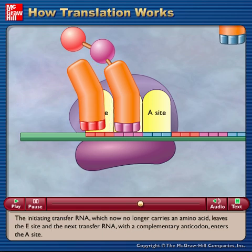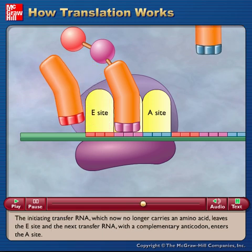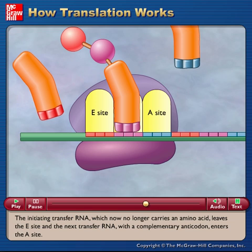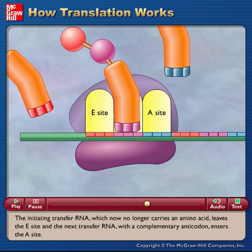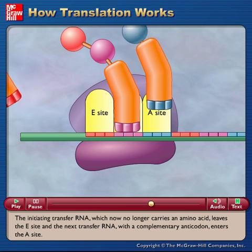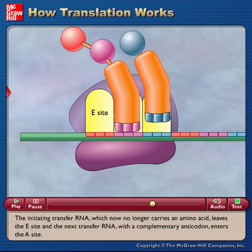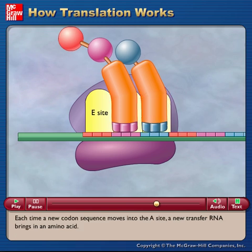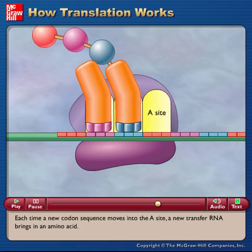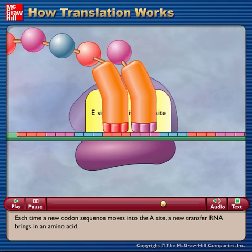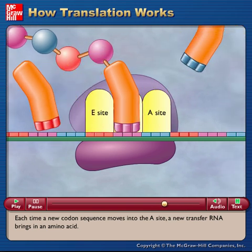The initiating transfer RNA, which now no longer carries an amino acid, leaves the E site and the next transfer RNA with a complementary anticodon enters the A site. Each time a new codon sequence moves into the A site, a new transfer RNA brings in an amino acid.